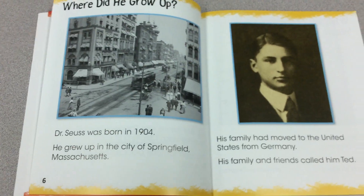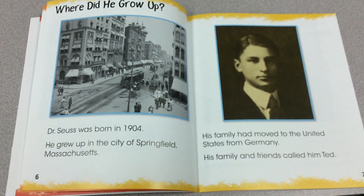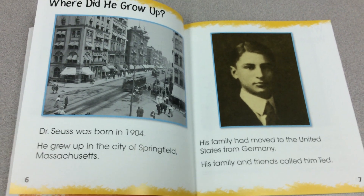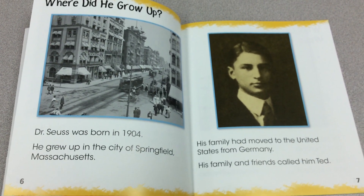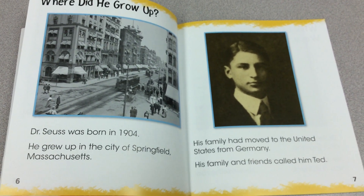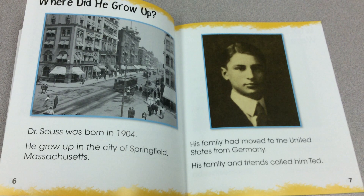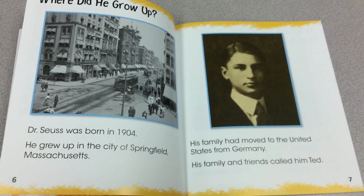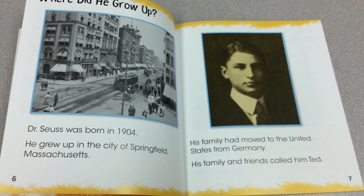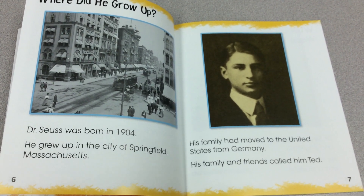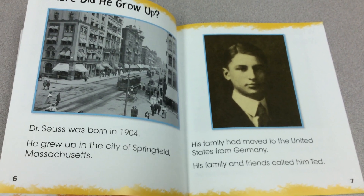Where did he grow up? Dr. Seuss was born in 1904. He grew up in the city of Springfield, Massachusetts. His family had moved to the United States from Germany. His family and friends called him Ted.